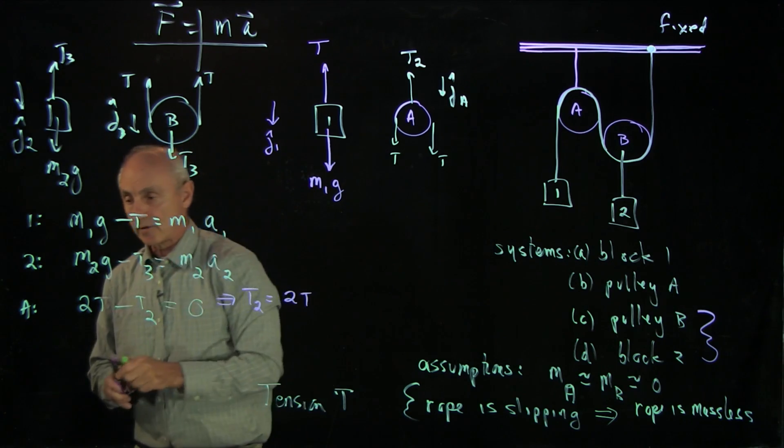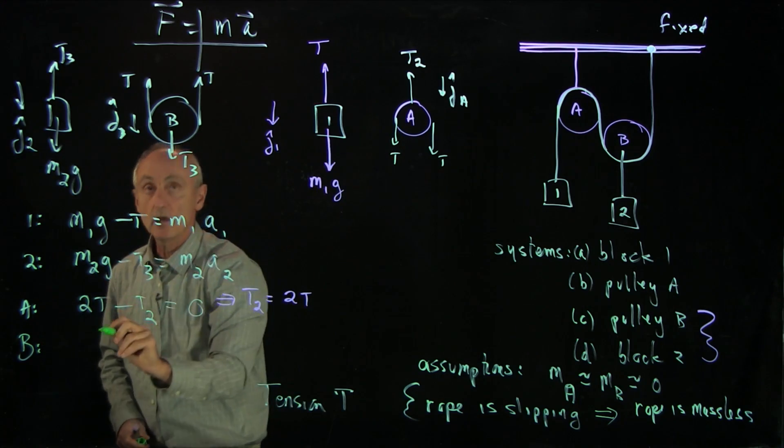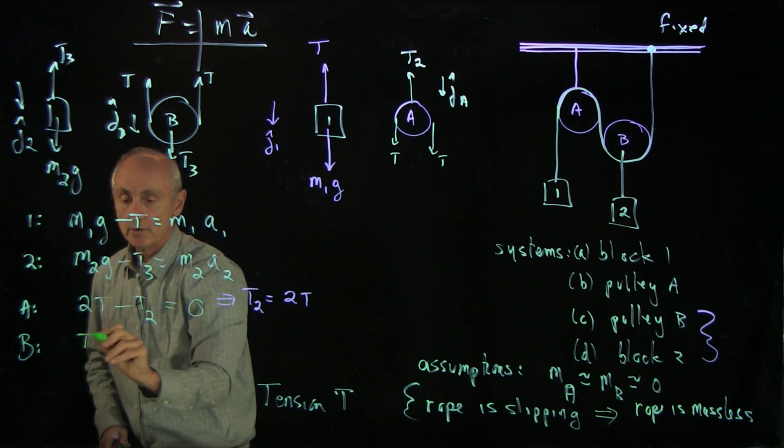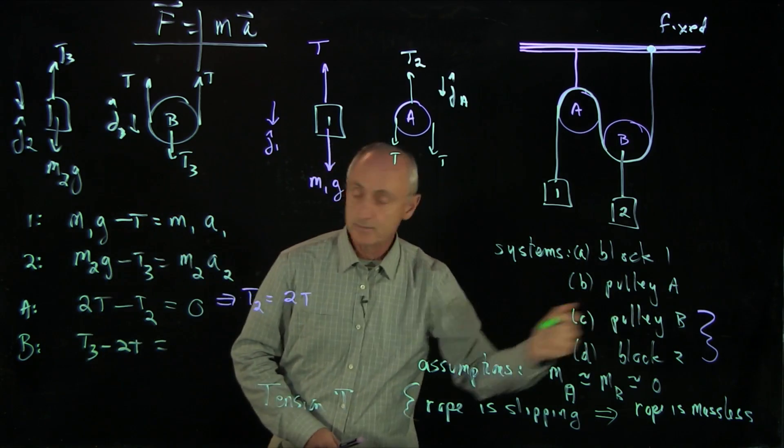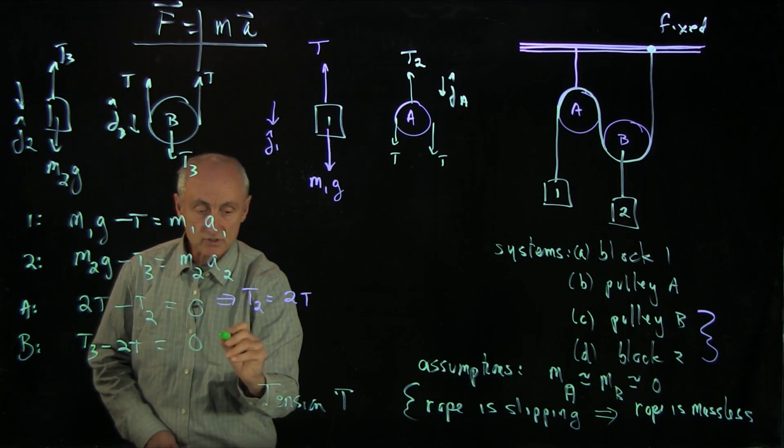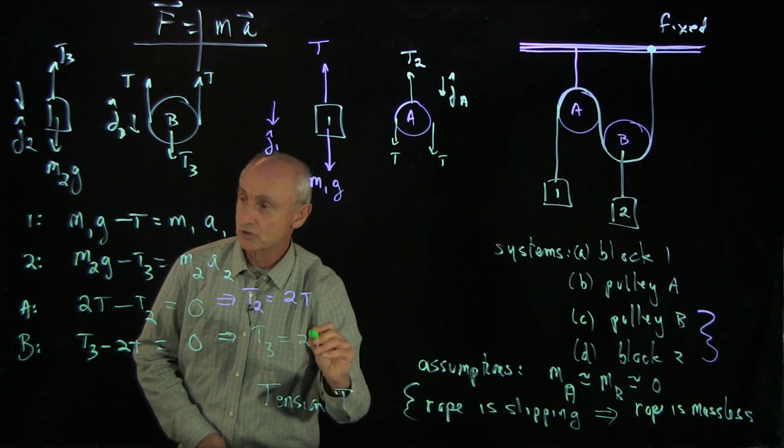Finally, we have B. What is the forces on B? We have T3 minus 2T. And again, pulley B is 0. And so we see that T3 is equal to 2T.